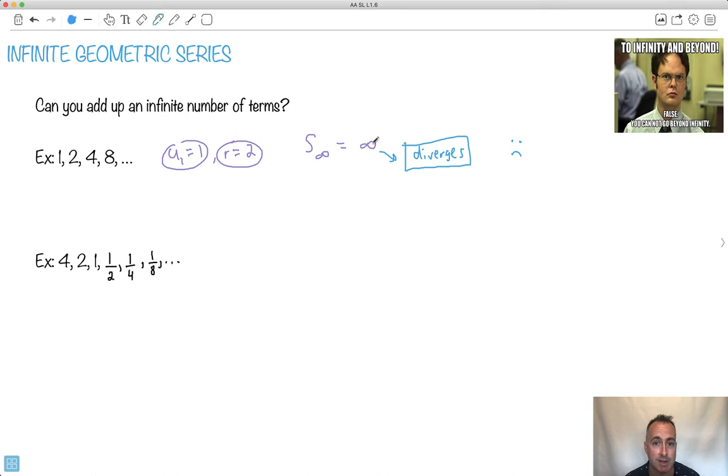We can, we just get an answer of infinity. That's not very helpful. But what if it's a geometric sequence with a fraction as the ratio? This is geometric as well. The first term is 4, and the common ratio is 2 over 4, which is 1 half. So u1 is 4, r is 1 half. Now let's see what happens.